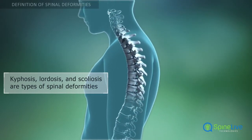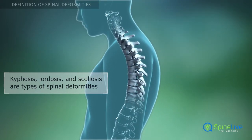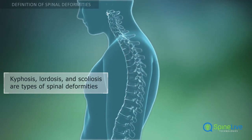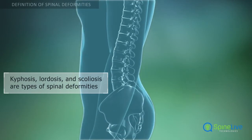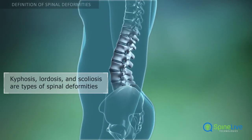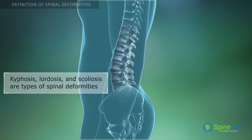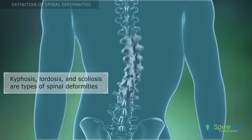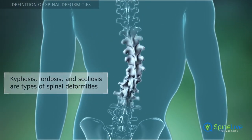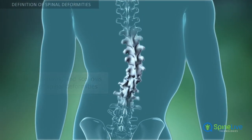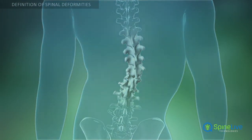Kyphosis is characterized by the pronounced rounding of the thoracic region of the spine. In lordosis, the lumbar curve of the backbone is exaggerated inward. Scoliosis is the deformity found when the spinal column develops a lateral curve.